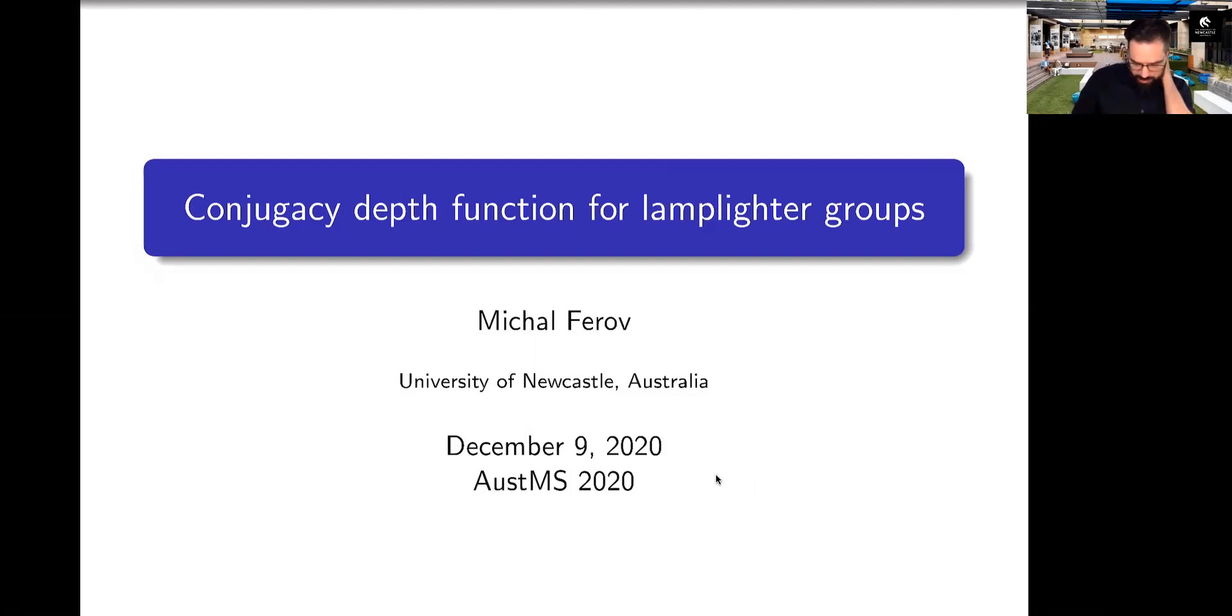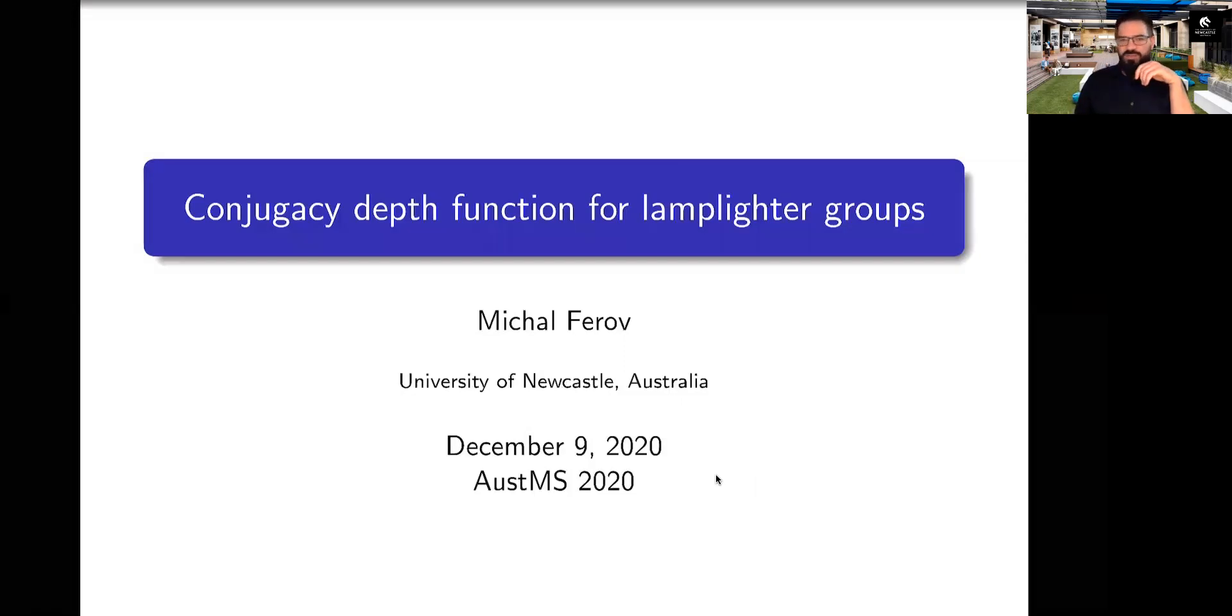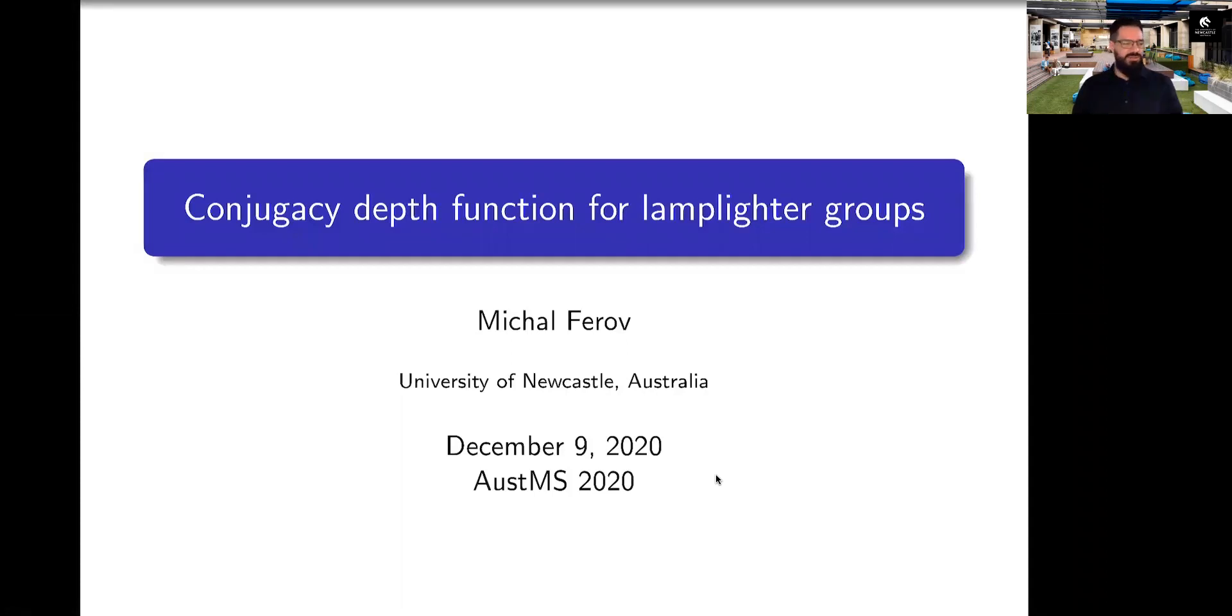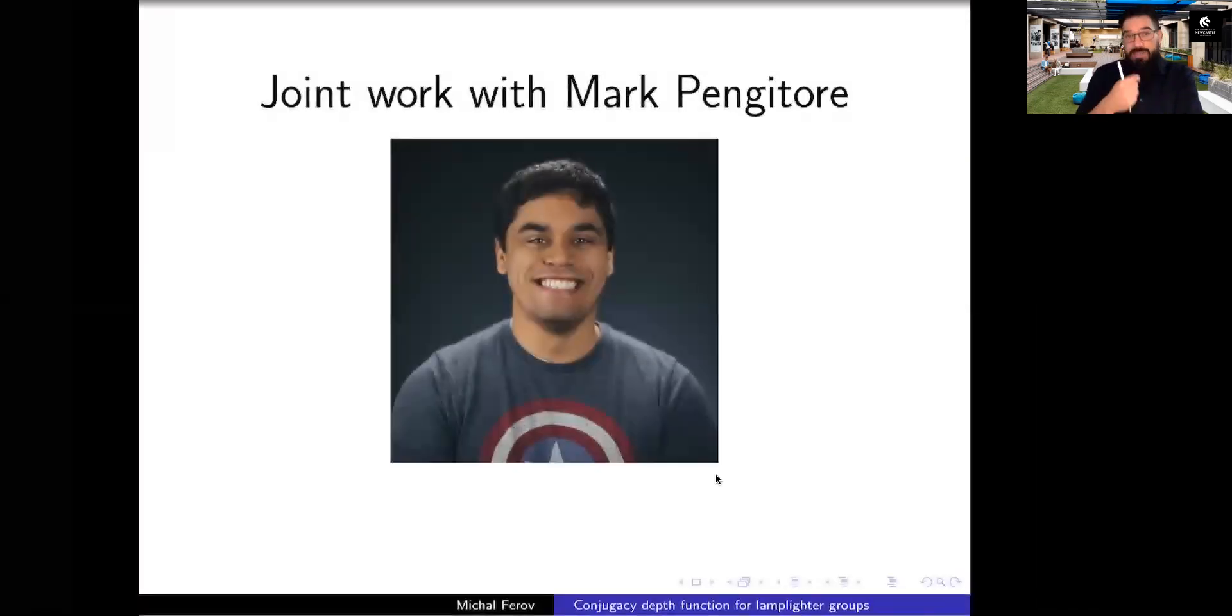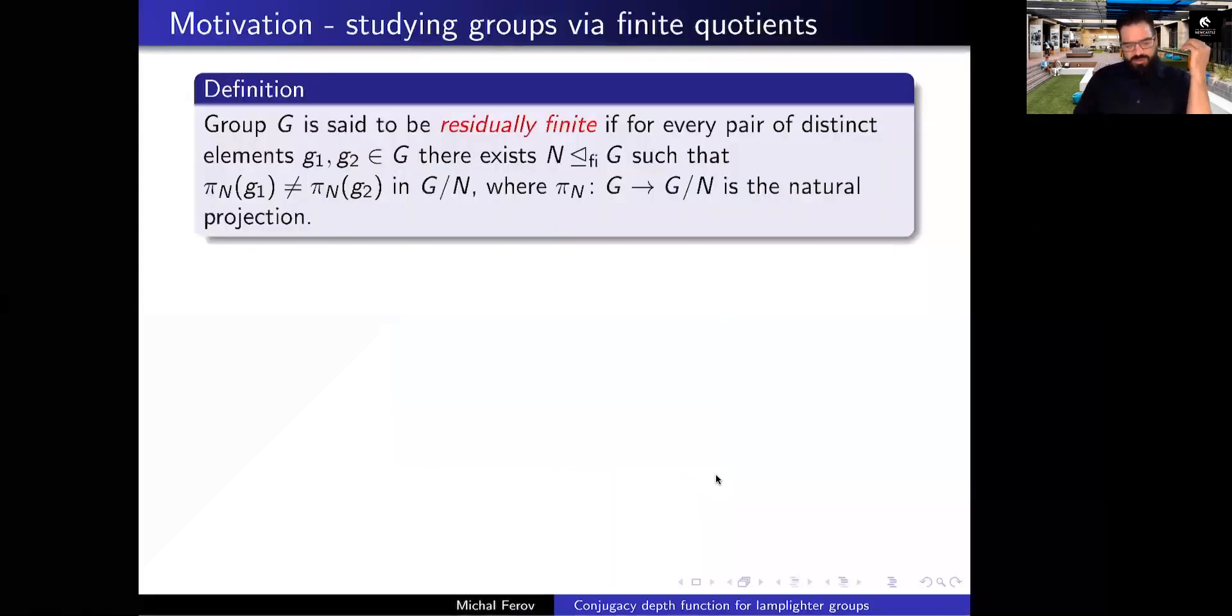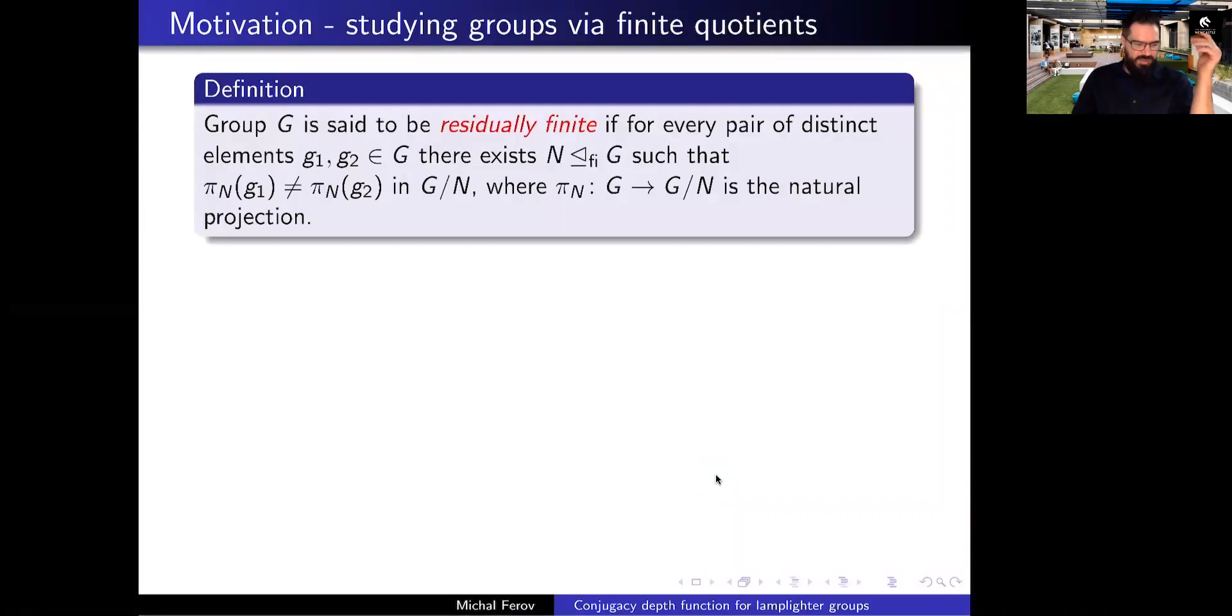Alright, so I'll try to explain what this means and perhaps why it's interesting. Unlike the rest of the Newcastle crowd, I will not be talking about totally disconnected locally compact groups. I mean, in some sense yes, because I'll be talking about discrete groups which are trivially TDLC, but I will not really be talking about them in any topologically interesting way. So everything I say is joint work with Mark Pengitor from Ohio State.